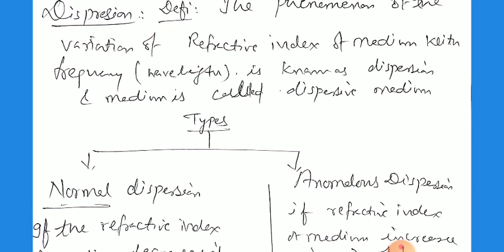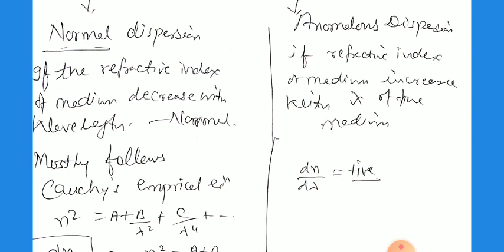What are the types of dispersion? There are two types: number one is normal dispersion, and the second is Anomalous Dispersion. In normal dispersion, the refractive index of the medium decreases with wavelength. Most materials follow this condition. In Anomalous Dispersion, the refractive index increases with wavelength — dn/dλ is positive — whereas for normal dispersion dn/dλ is negative.